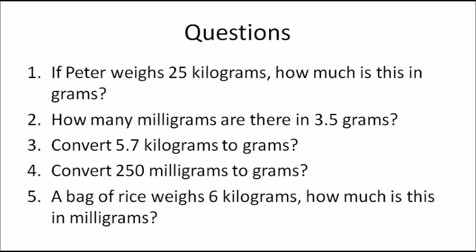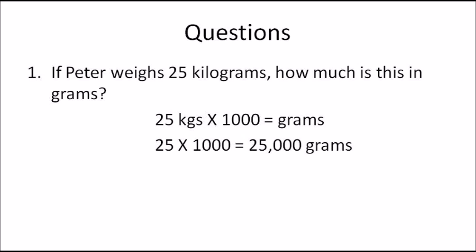Question 1: If Peter weighs 25 kilograms, how much is this in grams? You need to convert kilograms to grams, so multiply by 1000. 25 × 1000 = 25,000 grams, because one kilogram makes 1000 grams, so 25 kilograms makes 25,000 grams.